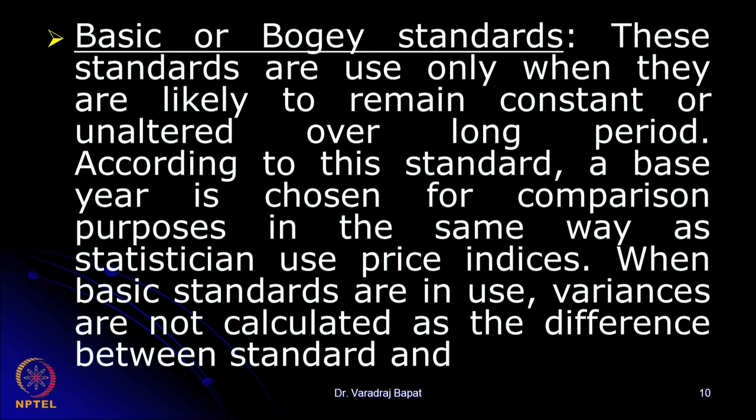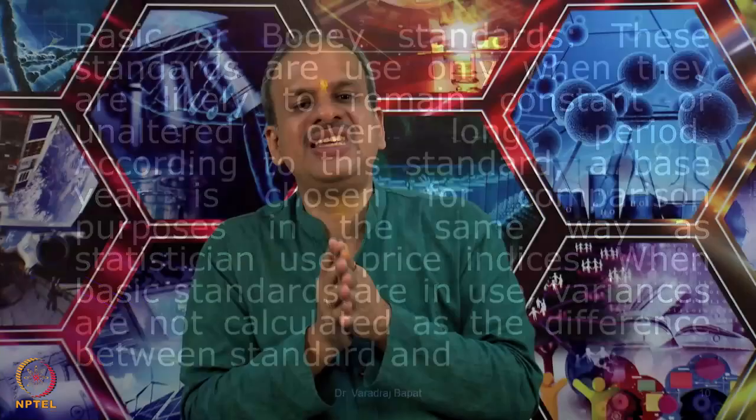The next type is basic or bogie standards. These standards are used when they are likely to remain constant or unaltered for a fairly long time. A base year is chosen — when there may not be any time or expertise to set standards in a systematic way. Whatever is achieved in that base year, if it is a normal year, is considered as the standard. That is why it is called basic standards.